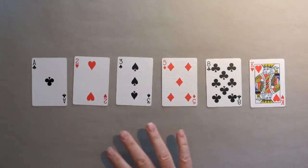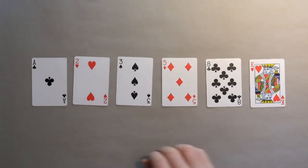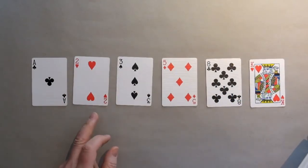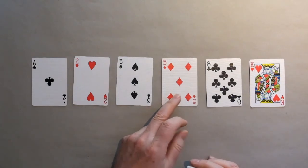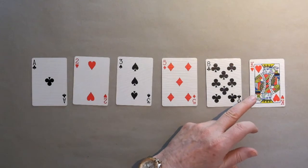Let's take a closer look at the Pack of Little Fibs trick. Here are the six cards we're going to be using. We have the ace of clubs, the two of hearts, the three of spades, the five of diamonds, the eight of clubs, and the king of hearts.